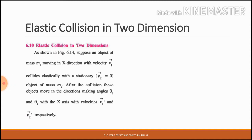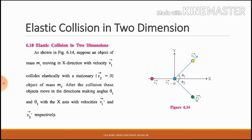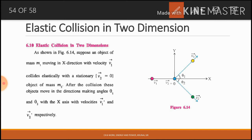In the previous lecture we discussed Elastic Collision in One Dimension. Now here, what is the difference? In Elastic Collision in Two Dimensions, the objects move in different directions after collision — the bodies move into different dimensions.